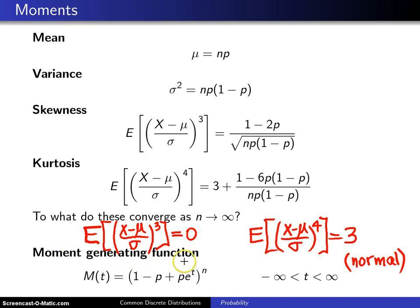Finally, the moment generating function, without the derivation of course, turns out to be this for all t values between negative infinity and infinity.